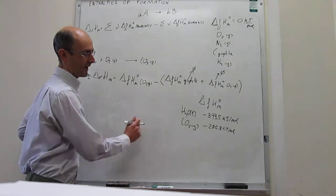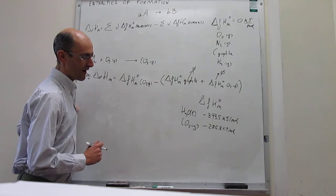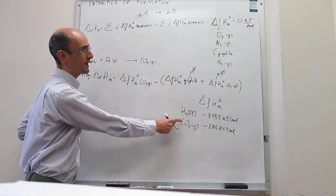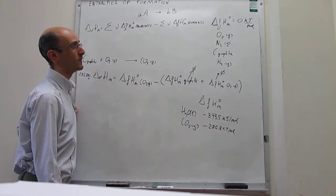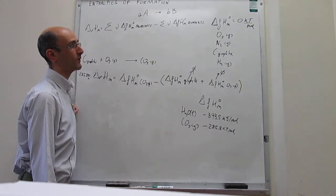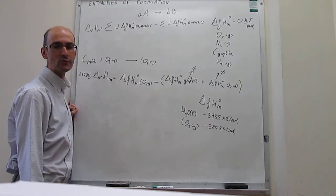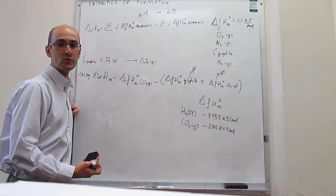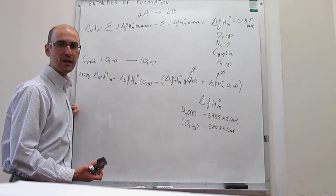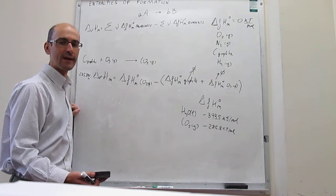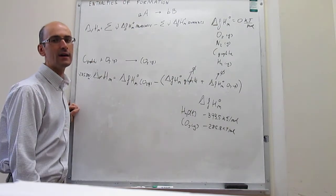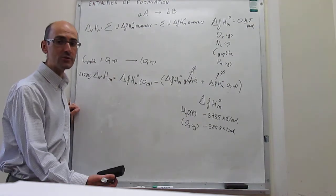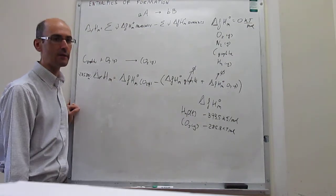Tables exist in which people have tabulated the enthalpies of formation of all molecules that you can think of. So when you have the molecules involved in a chemical reaction, you can simply use this expression to calculate the change in enthalpy in the reaction. Here we have determined the values for the enthalpies of formation for water(l) and CO2(g), and by definition we know those values are zero for the most stable allotropes of elements.